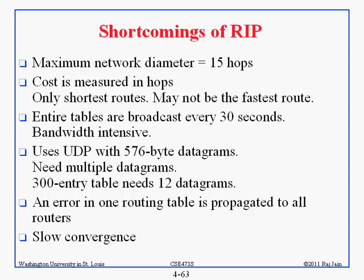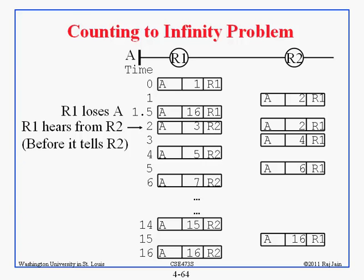If one router makes a mistake, everybody gets that mistaken information and it causes a big problem. This is called the counting to infinity problem. Let's see how mistakes propagate: suppose R1 and R2 are exchanging information. R1 says it can reach A with cost 1. R2 notes down that it can reach A in 2 hops via R1.